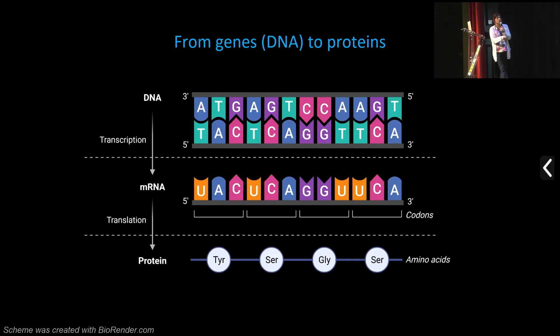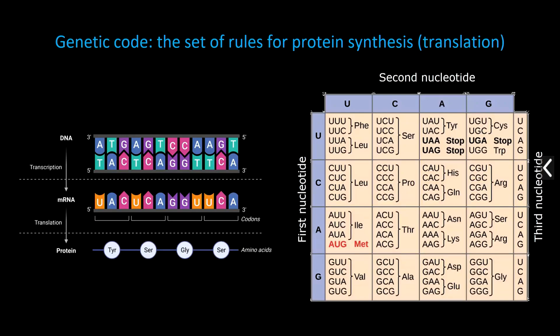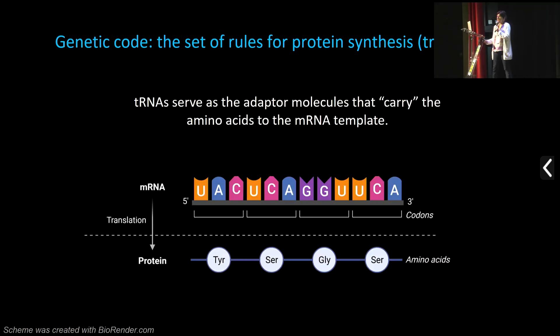The information in our genes — DNA — needs to be translated into the amino acid sequence inside proteins. You first have the gene or DNA, transcription produces messenger RNA, and then the information from mRNA gets translated into proteins. Very important for this is the genetic code — the set of rules that a cell uses for protein synthesis. This is rather universal: all forms of life use this same genetic code.